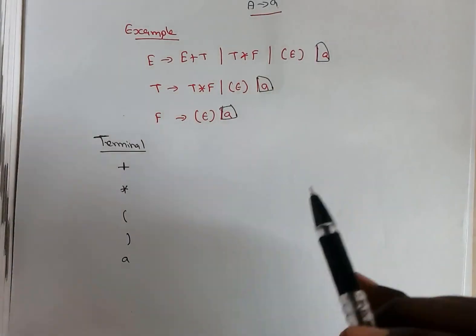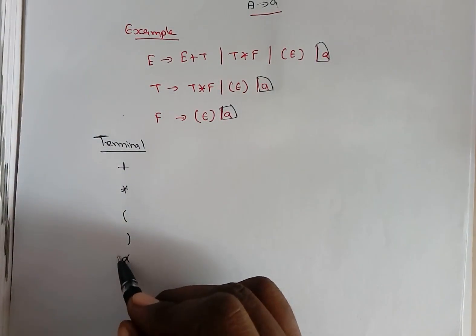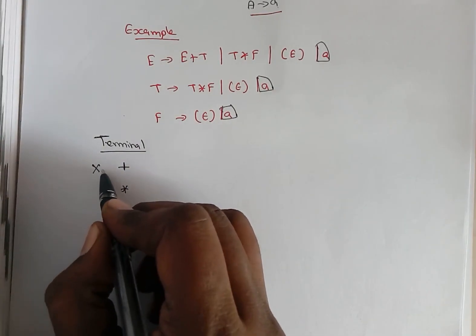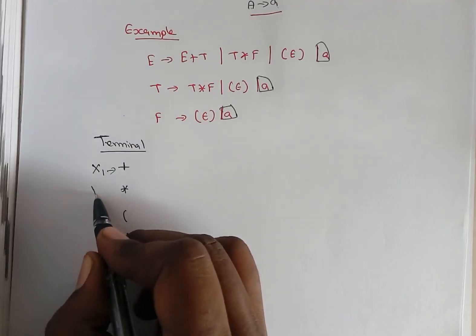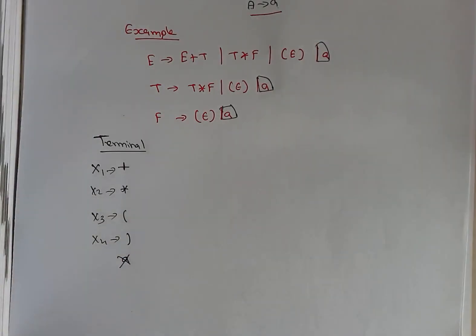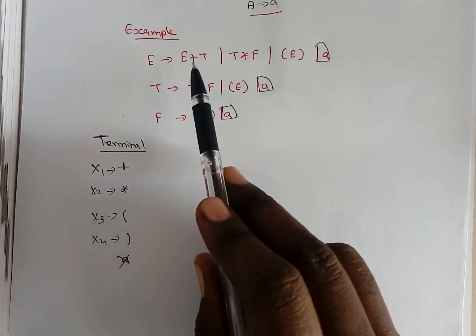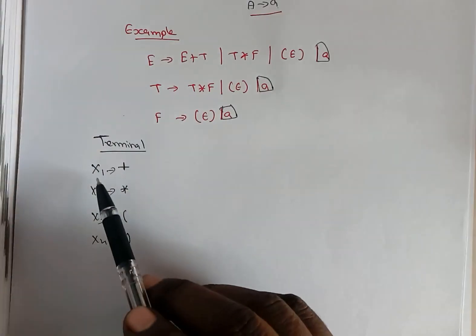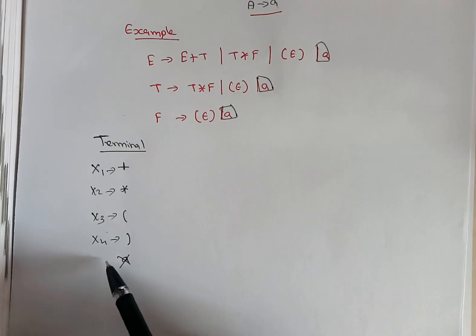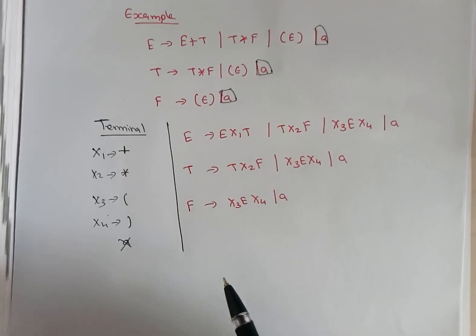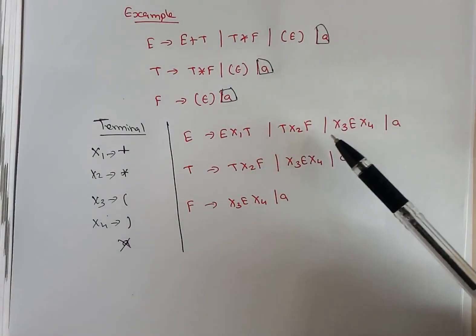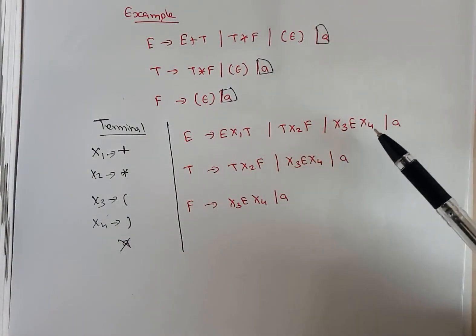For the remaining terminal symbols, assign a new variable: x1 as plus, x2 as star, x3 as open bracket, and x4 as close bracket. Now I am going to rewrite the grammar, substituting plus with x1, star with x2, open bracket with x3, and close bracket with x4. This is the grammar obtained after those substitutions.